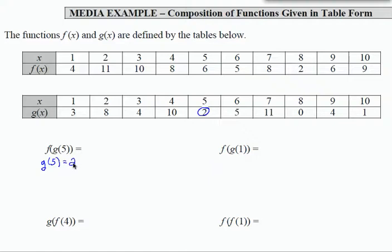Now I want to take that result and use it as input into function f. So what I'm doing here is I'm computing now f of 2. So I'm using that output as input into function f. I'm looking in function f at an input of 2. The output is 11. Therefore, f of g of 5 equals 11.